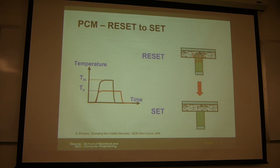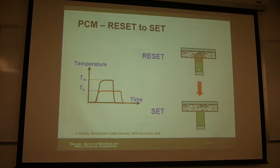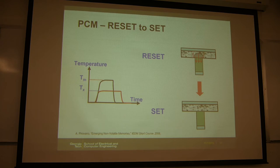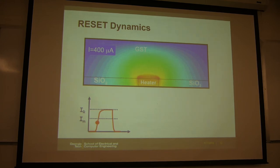Question: is quenching just using the environment's temperature? Yes, you just remove your pulse and the temperature goes down. Another question: why do we need a resistor — can't we just use an electrode in direct contact? You can, but this contact plug simplifies fabrication since you deposit the thin film as a blanket to the wafer. We'll talk about the more advanced cell later.